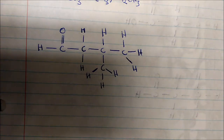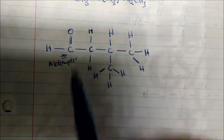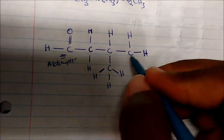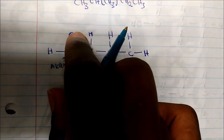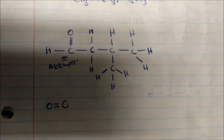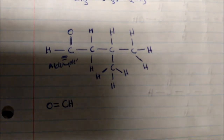This functional group — a carbon double bonded to an oxygen with a hydrogen at the end — is called an aldehyde. Looking at this molecule from left to right, I see a carbon bonded to an oxygen and a hydrogen, which I write as C double bonded to O with H. Then I have a CH2.